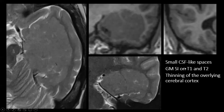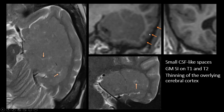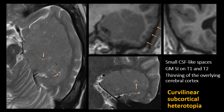This bulky mass-like lesion also has the same signal intensity as the cerebral cortex on both T2 and T1-weighted images. We see some very small cyst-like lesions interspersed in the lesion, and we also have some thinning of the cerebral cortex in the temporal lobe lateral to this mass-like lesion. This was not a tumor — this was a curvilinear subcortical heterotopia.